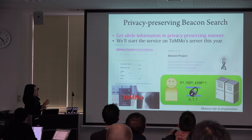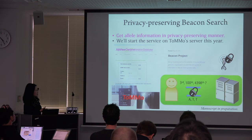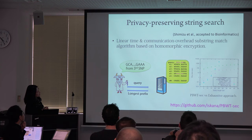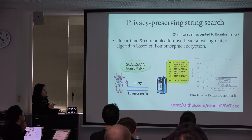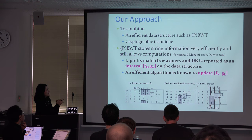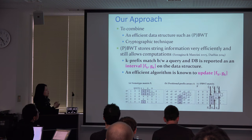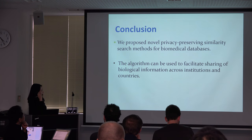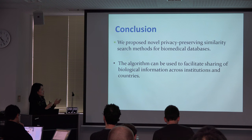We also developed a privacy-preserving BioBank search inspired by the BioBank project. This is a collaborative study between our institute and the Tohoku Medical Megabank. We also developed more sophisticated searching by combining the succinct data structure and homomorphic encryption — specifically, combining BWT and homomorphic encryption. I've worked on privacy-preserving methods for two or three years, and we believe these technologies can facilitate sharing of biological information across institutions and countries.